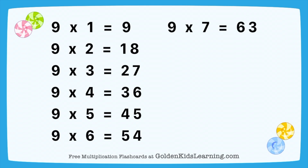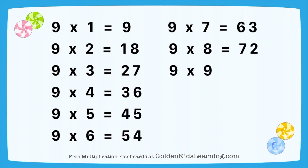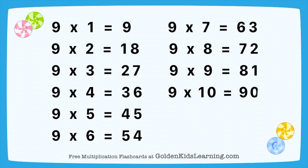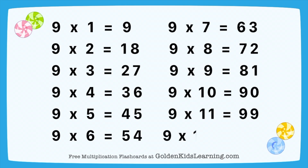9 times 8 equals 72. 9 times 9 equals 81. 9 times 10 equals 90. 9 times 11 equals 99. 9 times 12 equals 108.